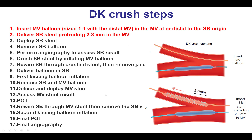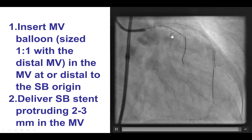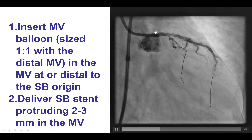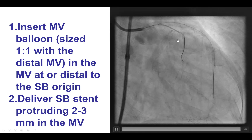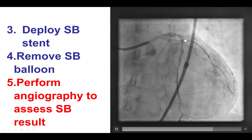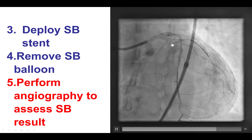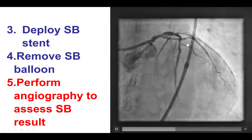The first step is to insert a balloon into the main vessel and then a stent into the side branch. The side branch is the circumflex, so here we have the stent into the circumflex protruding 2-3 mm into the left main. We have a balloon in position to perform the crush after the side branch stent is deployed. This was successfully done and the balloon of the stent was removed.